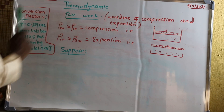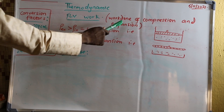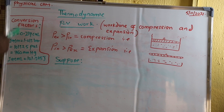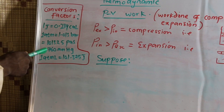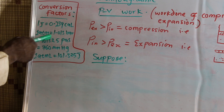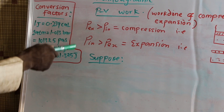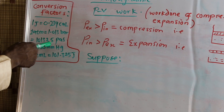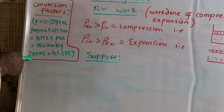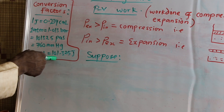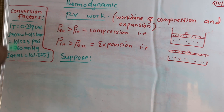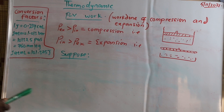Let's move to PV work. PV work is nothing but work done of compression and expansion. Before going in, one must know the conversion of these factors: one joule is equivalent to 0.239 cal; one atm is equivalent to 1.013 bar, which is equal to 101,325 pascals, and equivalent to 760 mmHg. One may be asked to leave the answer in one form of these conversions after calculating or solving the problem.